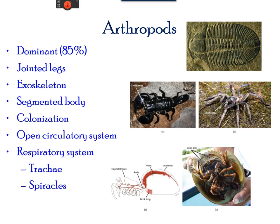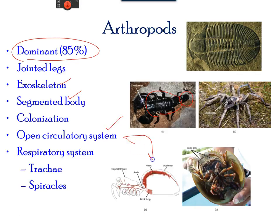The arthropods have jointed legs and dominate the animal kingdom. Most arthropods have an exoskeleton and a segmented body with a head, thorax, and abdomen or trunk area. They have an open circulatory system in which blood floods the internal organs. They also have a primitive respiratory system with a trachea used to transport air throughout the body, and openings to the outside called spiracles for gas exchange.